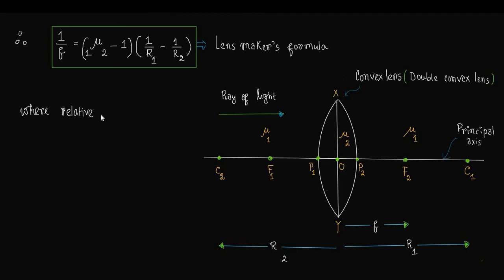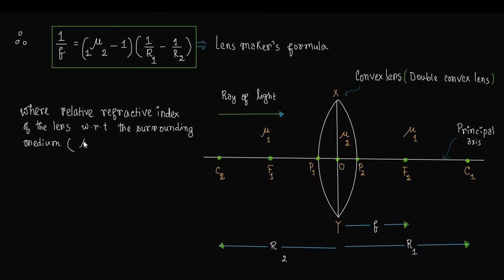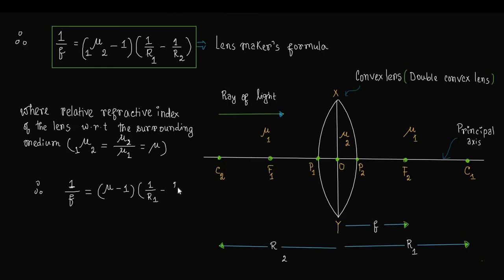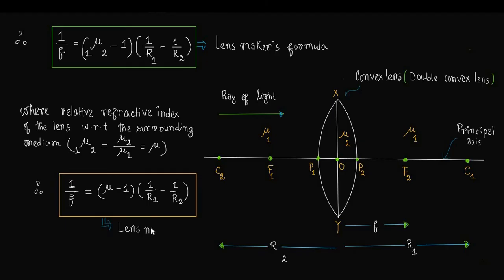Where the relative refractive index of the lens with respect to the surrounding medium, denoted 1mu2, is equal to mu2 divided by mu1, which can be denoted simply as mu. Here mu1 is the refractive index of the surrounding medium and mu2 is the refractive index of the material of the lens. We then get 1/f = (mu − 1)(1/R1 − 1/R2), which is the Lensmakers Formula.